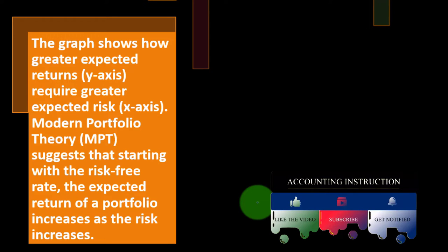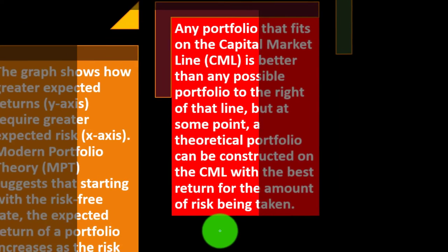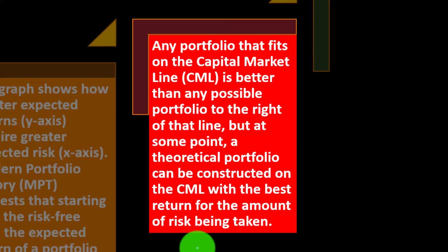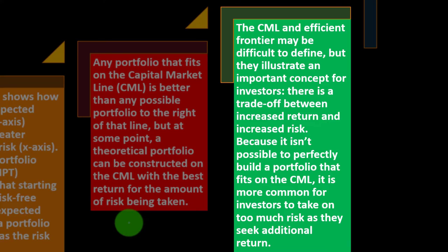The graph shows how greater expected returns (y-axis) require greater expected risk (x-axis) — more risk typically means more expected return. Modern Portfolio Theory (MPT) suggests that starting with the risk-free rate, expected portfolio return increases as risk increases. Any portfolio that fits on the Capital Market Line (CML) is better than any possible portfolio to the right of that line. At some point a theoretical portfolio can be constructed on the CML with the best return for the amount of risk taken. The CML and efficient frontier illustrate an important concept: there is a trade-off between increased return and increased risk.